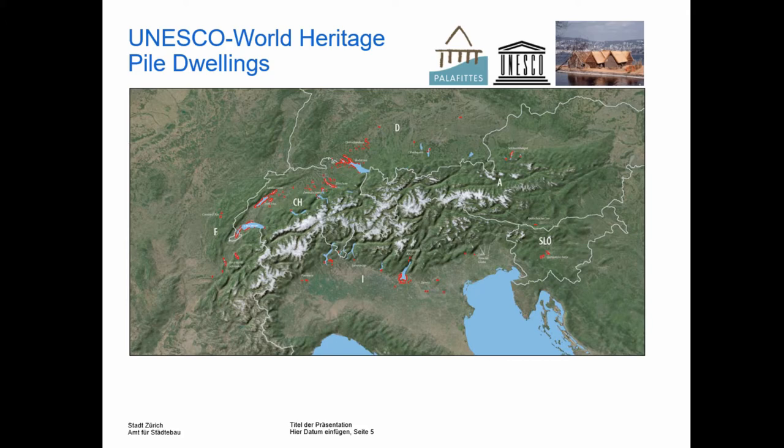First, a brief overview of what we are studying. The pile dwelling phenomenon can be found on nearly all alpine lakes surrounding the Alps, especially in France, Switzerland, Italy, Germany, Slovenia, and Austria, whereby most of the sites lie on the shores of the Swiss lakes. Surrounding Lake Zurich, we can record over 100 of those pile dwellings.